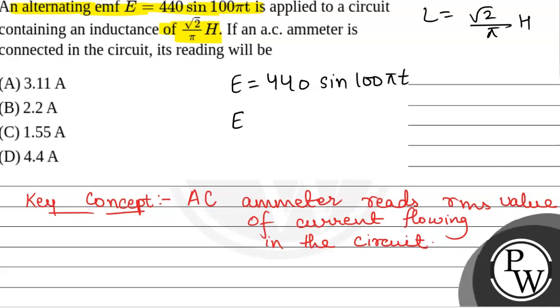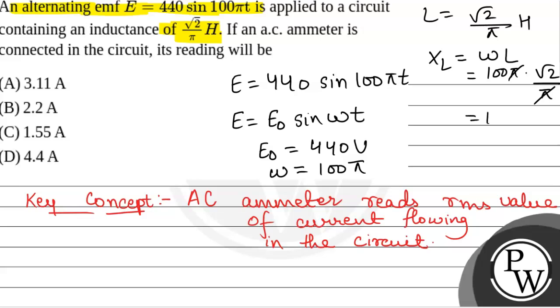Comparing this with the standard form of EMF that is E₀ sin ωt, we will have E₀, the peak value of EMF, is 440 volts and ω = 100π. We will have X_L, the inductive reactance, equal to ωL, that will be 100π multiplied by √2/π. This gives X_L = 100√2 ohm.